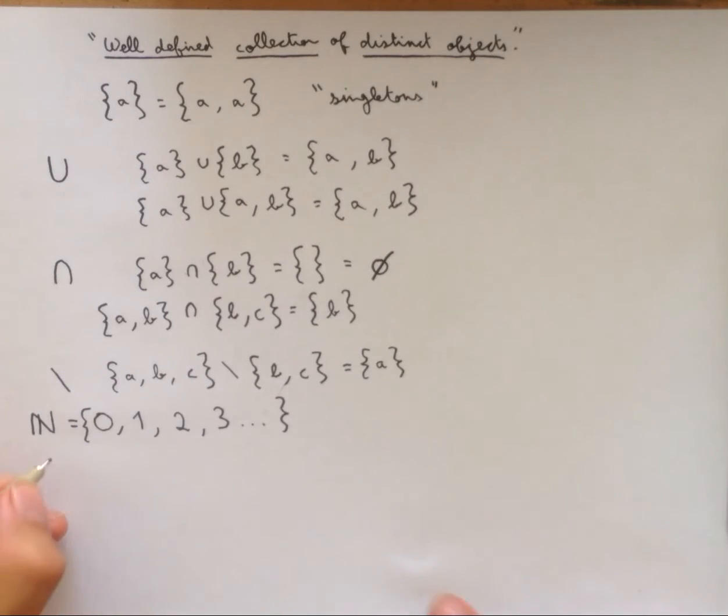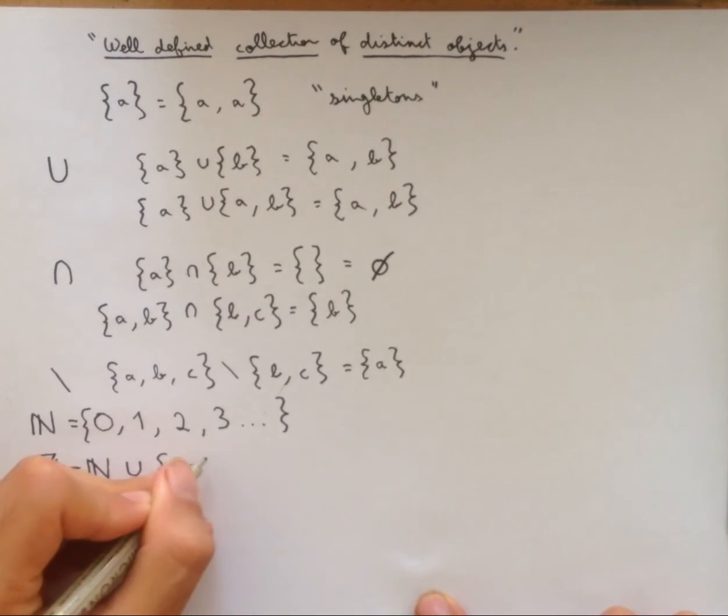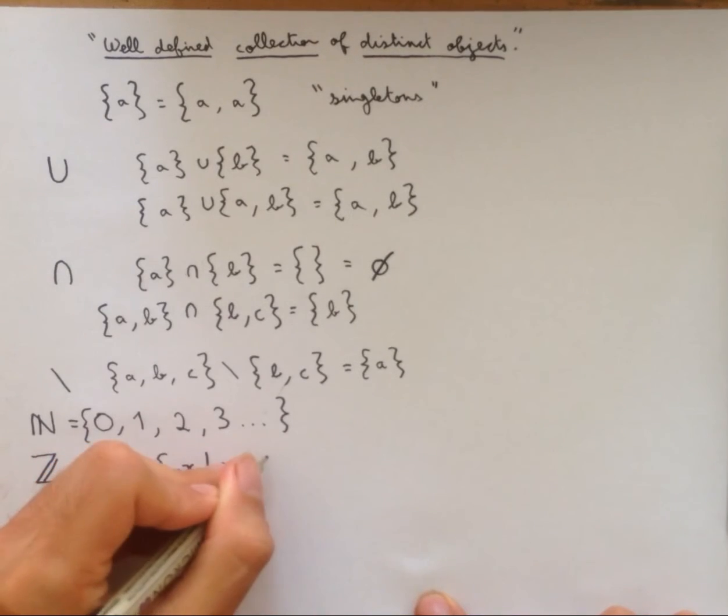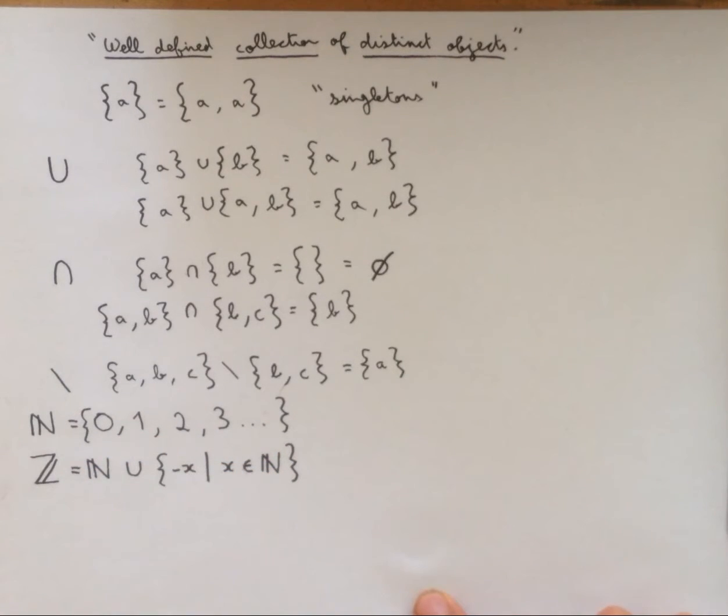The next set we can define is using the natural numbers, we can define the integers, which are the positive and negative natural numbers. So we're going to start by taking set n, natural numbers, and union it with the set of negative numbers. And I'm going to write that like this. I'm going to say it's the set of all negative x such that x is in n. So this is some new notation. The curly brackets, once again, mean that I'm talking about a set. The bar reads as such that, and this e reads as is in. So when we read this all at once, we get this is the set of all negative x such that x is in n.